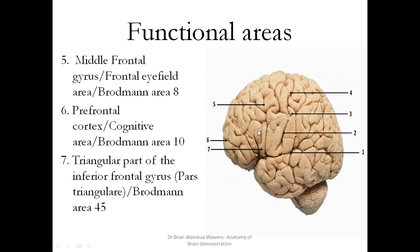Here you have the triangular part of the inferior frontal gyrus, also known as the pars triangularis. If you look at its shape, it looks triangular. This is Brodmann area 45, which is part of the motor speech area. It is also known as Broca's area.